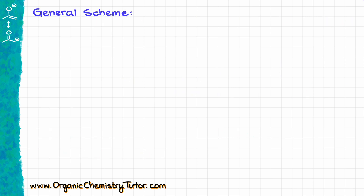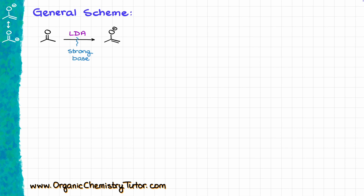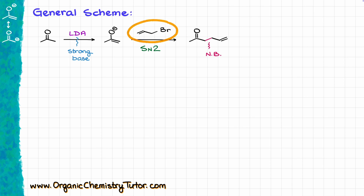Let's start by looking at the general scheme of the reaction. In a nutshell, we are going to be taking some sort of a carbonyl — in this case I'm just using acetone as an example — and we are going to treat that with a strong base in order to form an enolate anion. Then we are going to take our enolate, which is going to be a nucleophile, and react it with some sort of alkyl halide in order to make a new carbon-carbon bond.